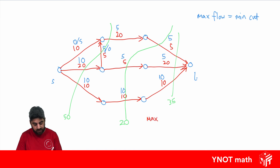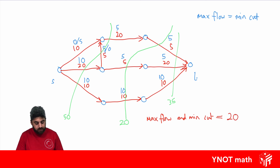So in this case our maximum flow and minimum cut is equal to 20. What we're saying is that if we push water through all of these pipes, these are the ones limiting our flow, and if we get all of that water across, that will be our maximum flow.